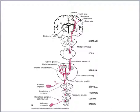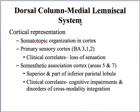The leg area is more medial. In terms of cortical representation within the parietal cortex, there is organization. The primary sensory cortex is also referred to as BA 3, 1, and 2. Damage to that area, in terms of clinical importance, is going to be loss of sensation. The association area is areas 5 and 7 and superior parts of the inferior parietal lobule. Damage to areas 5 and 7 will result in cognitive impairments and disorders of cross-modality integration.